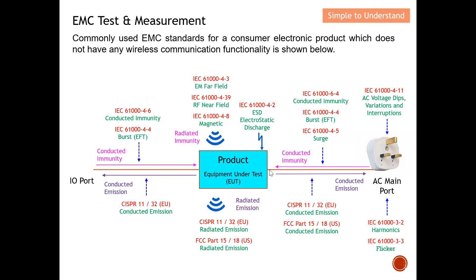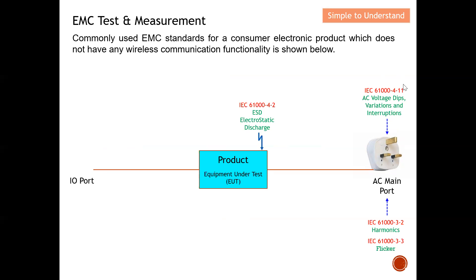All the tests are shown here. This is your EUT — you can see it has an AC main used to power it on. On the left-hand side there is an IO port. So this DUT has two cables: one for the AC main and one for the IO port.